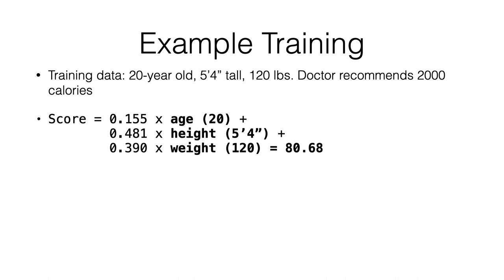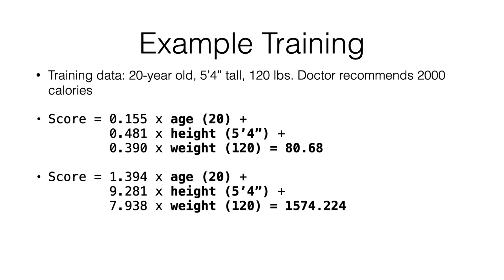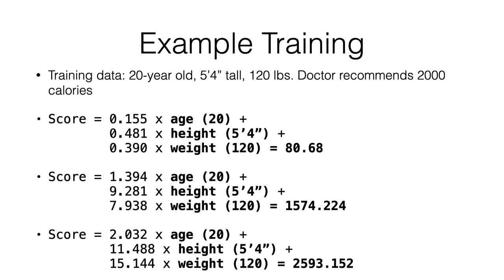Just intuitively, as humans we can say these weights are obviously too small, so let's make them bigger. I randomly made them bigger and got 1,574 — closer but still too small. So let's make them bigger again, and now we get 2,593 — too big. If this were to continue, we'd want to shrink the weights back down. Using calculus you can do this more intelligently rather than just randomly increasing the weights.